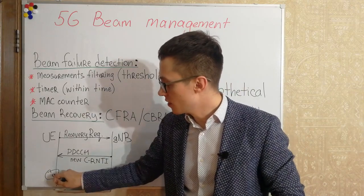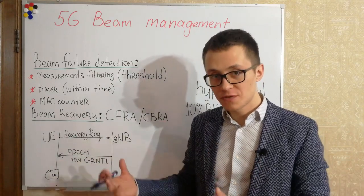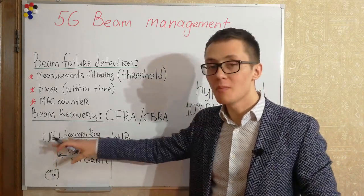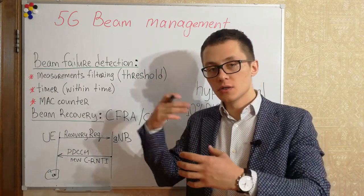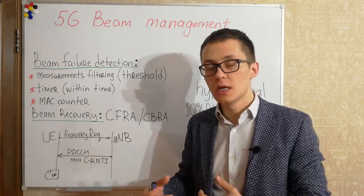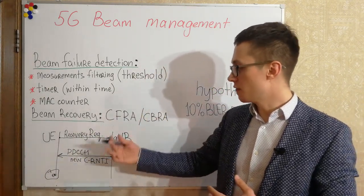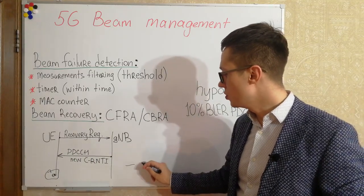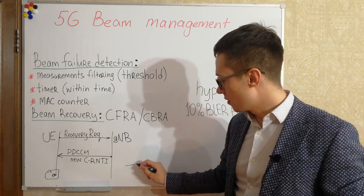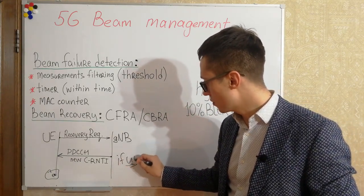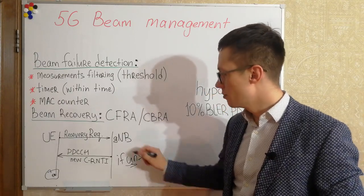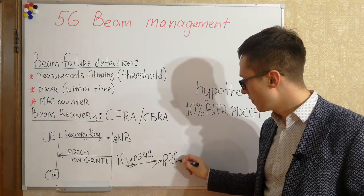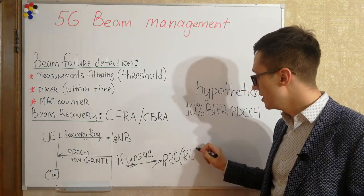If the user equipment can receive and understand that this is a PDCCH with the new cell RNTI, only then can we say that BIM failure recovery has completed successfully. There can be many attempts — again, the number is configurable. If the number of random access attempts exceeds the configured limit, only then does the user equipment send a report to the RRC level, indicating an unsuccessful BIM failure recovery.